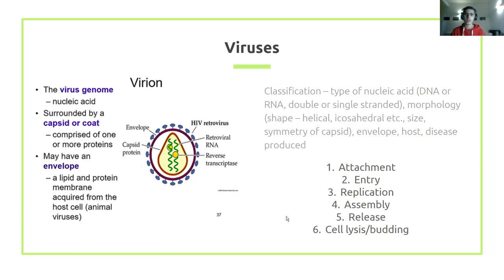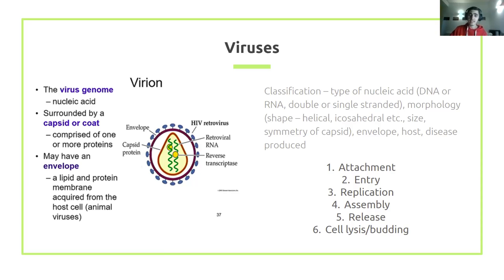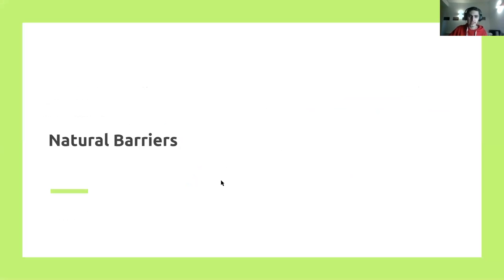Viruses are also classified by their shape — helical, icosahedral, and so on — though that's mostly relevant for naming conventions. In terms of viral replication, they attach, enter the host cell, replicate inside, assemble their viral proteins, make more copies, then cause the host cell to lyse and release copies — that's their method of attack.